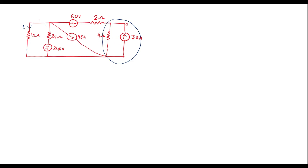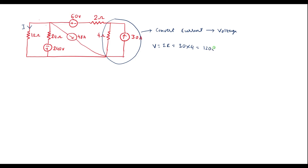Let me convert this current source into a voltage source. We know that V = I × R. Here I is 30 and R is 4, so the voltage source will be 120 volts. We replace this current source by a 120 volt source and connect the 4 ohm resistor in series with the voltage source.